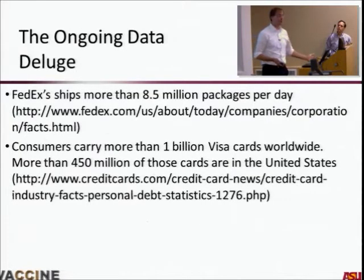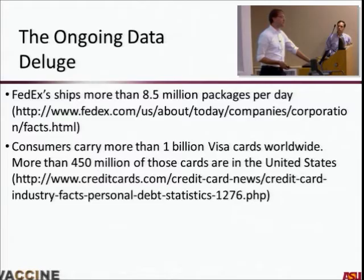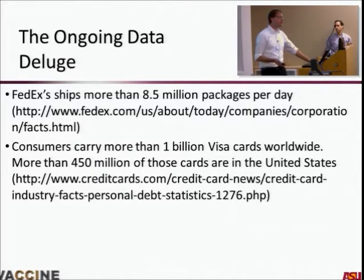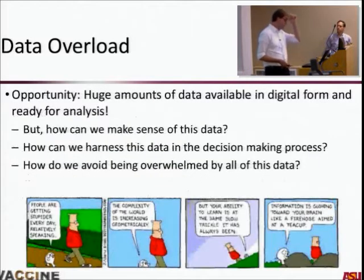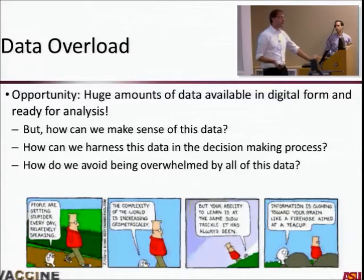Data comes in lots of different forms. We have FedEx shipping more than 8.5 million packages per day, so you have these sorts of network graphs of shipping transactions and all sorts of different data from those. Consumers are carrying more than one billion Visa cards worldwide. Can we find information that might be relevant and actionable in different situations? With this data overload, we have a huge opportunity — we have all this information available in digital form, but how can we make sense of it?